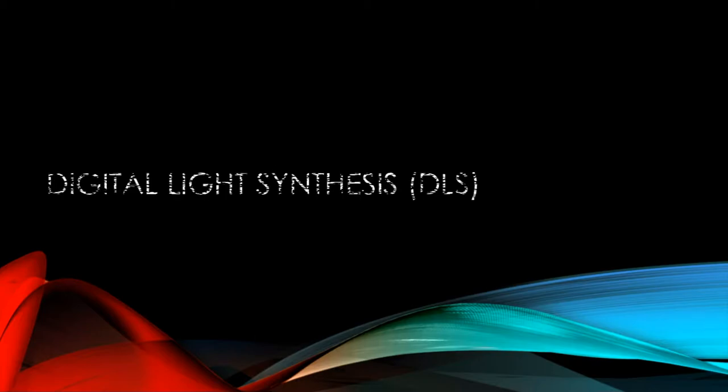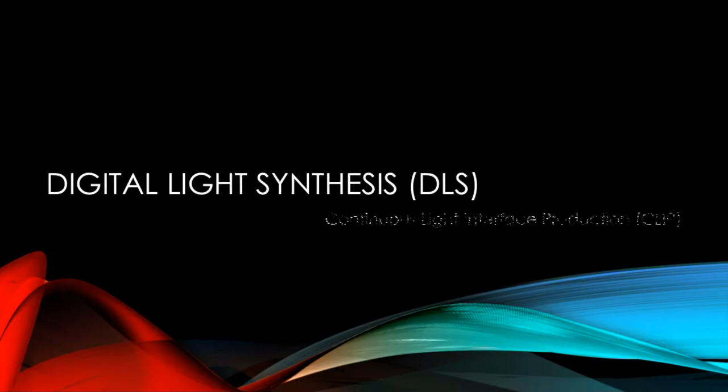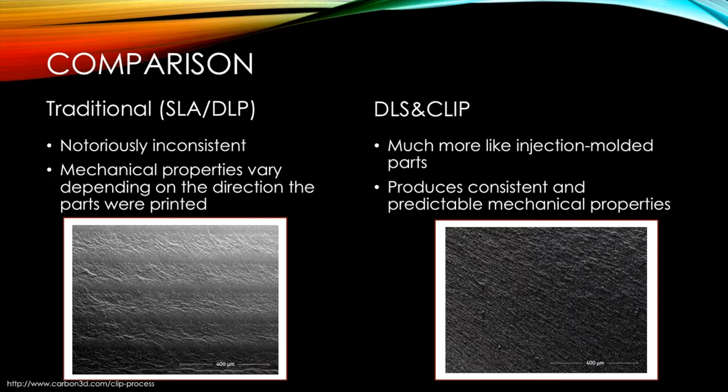Carbon 3D improved upon these two methods with their DLS and CLIP technology. Parts produced with SLA and DLP have notoriously inconsistent mechanical properties because of the molecular structure that results from their single layer printing methods.